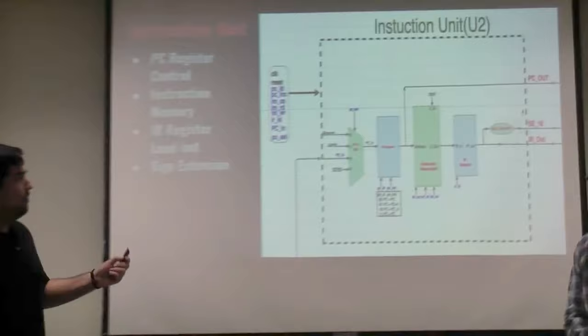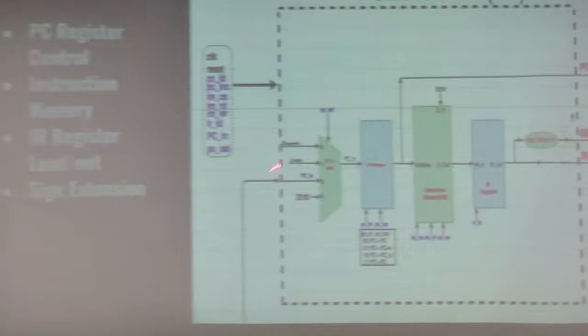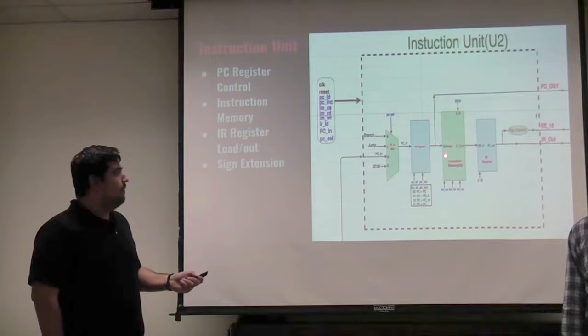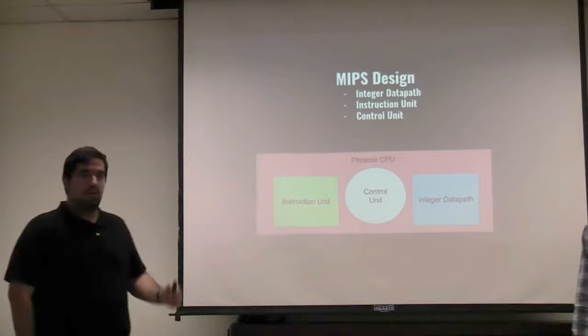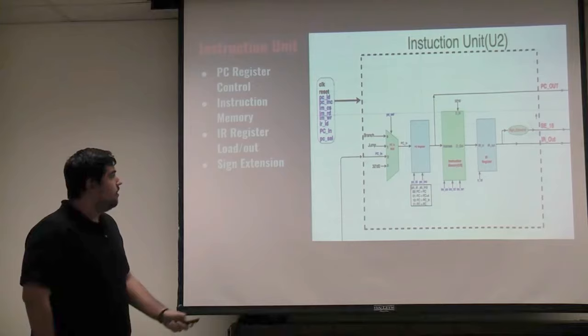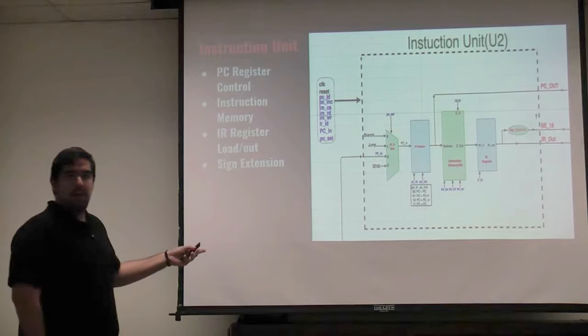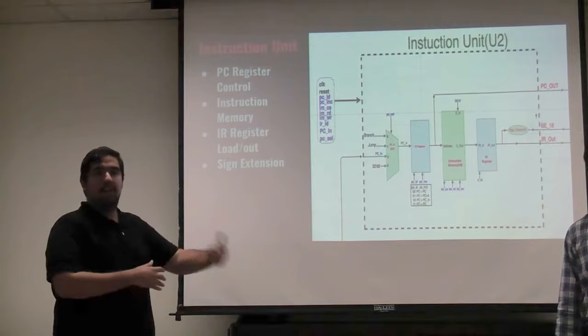The instruction unit handles the fetch state of the CPU. First you start off with a PC select, which passes the value of branch/jump PC in, or 32-bit zero, and that's stored into the PC register. The PC register is used as the address for the instruction memory. Once we load from the instruction memory, that is stored into the instruction register, which is then used by the control unit. The instruction memory write signal from the control unit is actually hardwired to zero, because we're never actually writing to instruction memory — we're only reading from it.